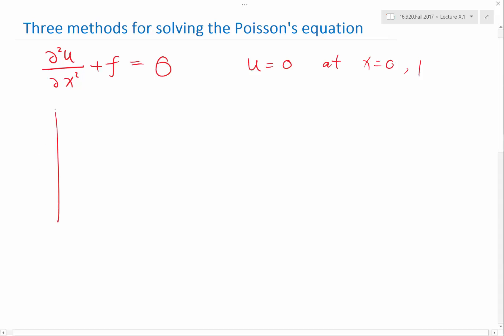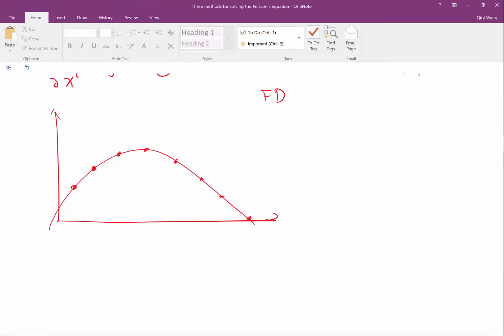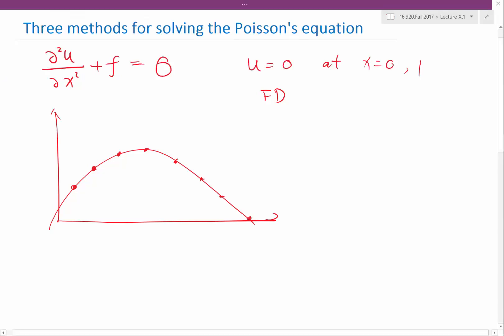So for finite difference, we have a solution. We store the values of the solution at these grid points. And then for finite difference, we approximate the second-order derivative using ui plus 1 minus 2 of ui plus ui minus 1 divided by delta x squared.